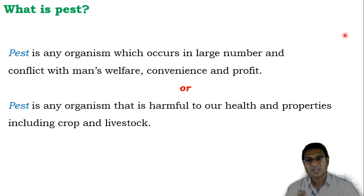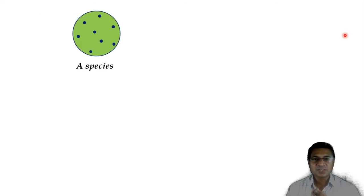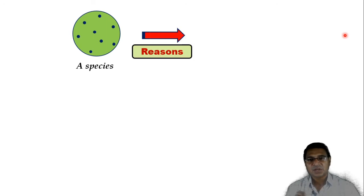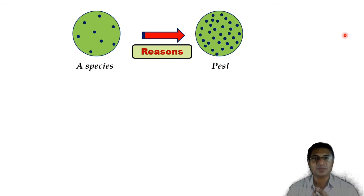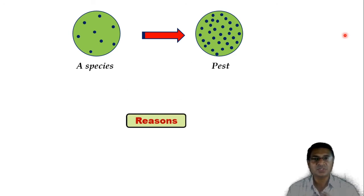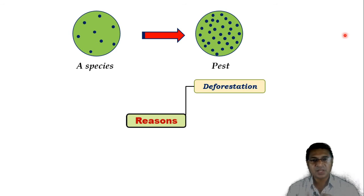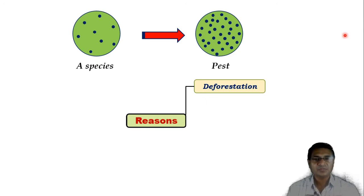In other words, a pest is any organism that is harmful to our health and properties, including crop as well as livestock. Suppose this is the number of individuals of a species which lives in a particular environment. Due to certain reasons it becomes a pest when the population increases. The first reason is deforestation — due to the cutting of trees, that land is used for cultivation, and pests present in that forest move toward the cultivated area. As the availability of food increases, the population increases, which creates problems.